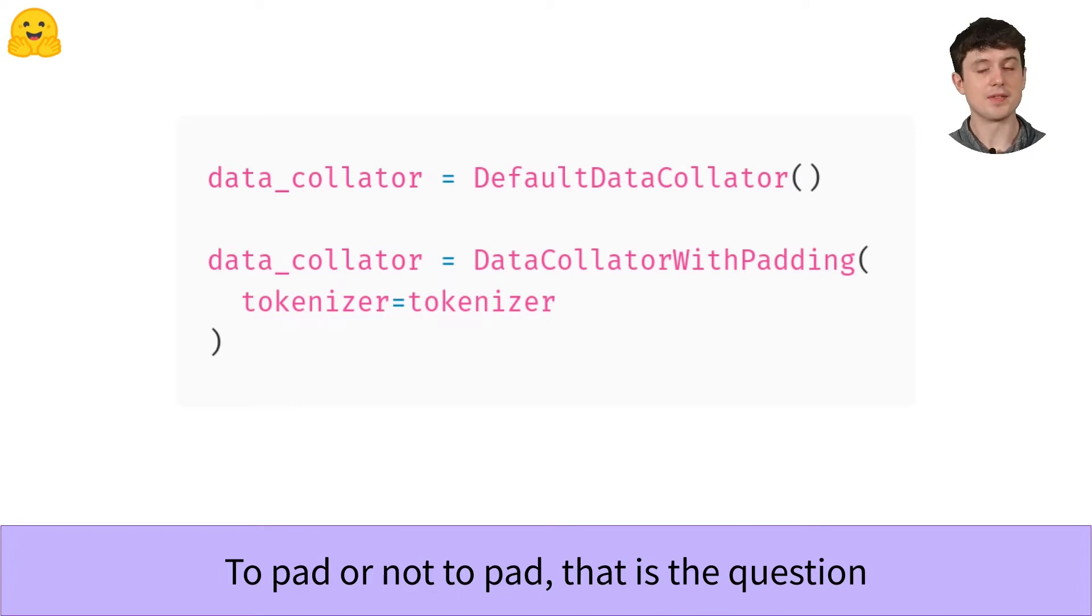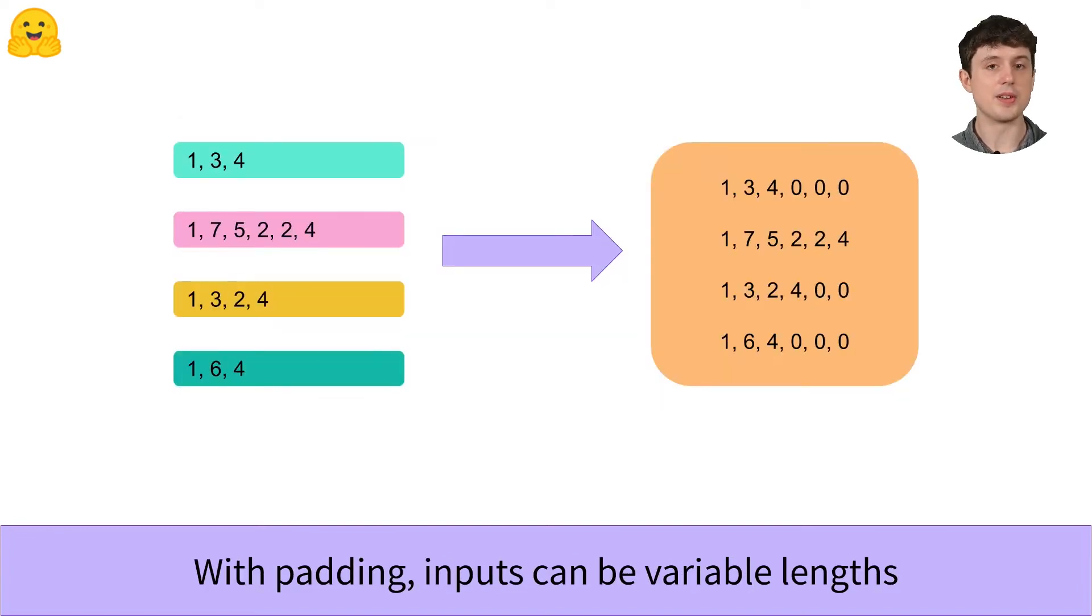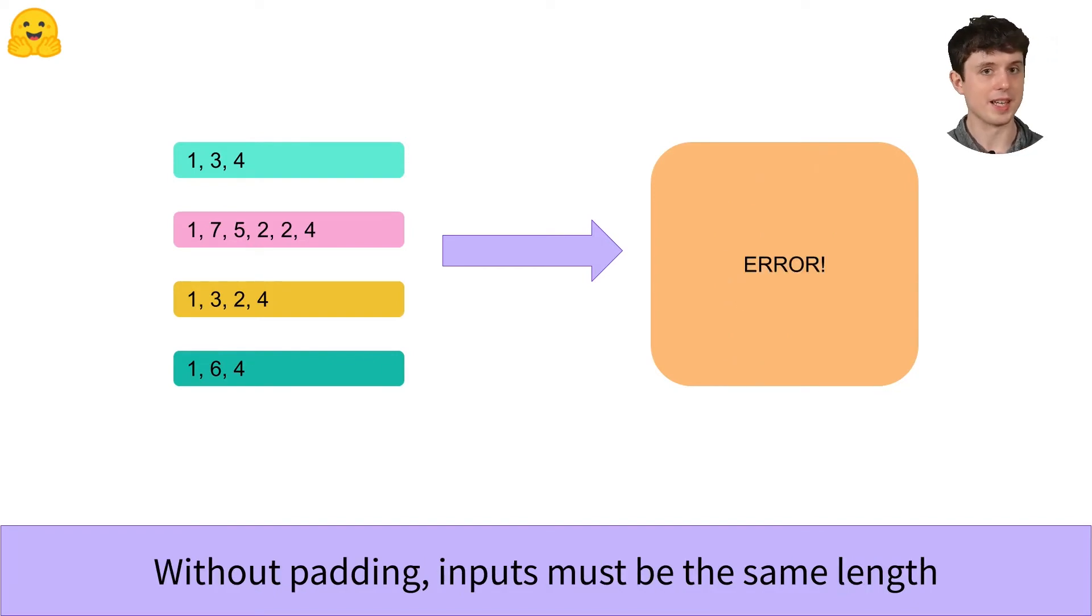Note that because different models have different padding tokens, DataCollatorWithPadding will need your model's tokenizer so it knows how to pad sequences properly. The DefaultDataCollator doesn't need a tokenizer to work, but it will as a result throw an error unless all of your sequences are the same length. So you should be aware of that.